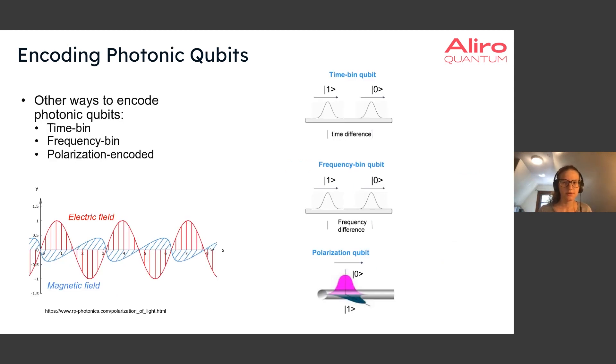There are also other ways to encode photonic qubits. There is time bin encoding. This type of encoding uses a time difference between when a photon is emitted to basically constitute the state that the photon is in. If there's no delay on the photon being emitted, then it could be in the zero state. But if there is a delay, it could be in the one state. There's also frequency bin encoding. This is very similar to time bin encoding, but in the frequency domain. Using different frequencies to determine which state the photon is in.